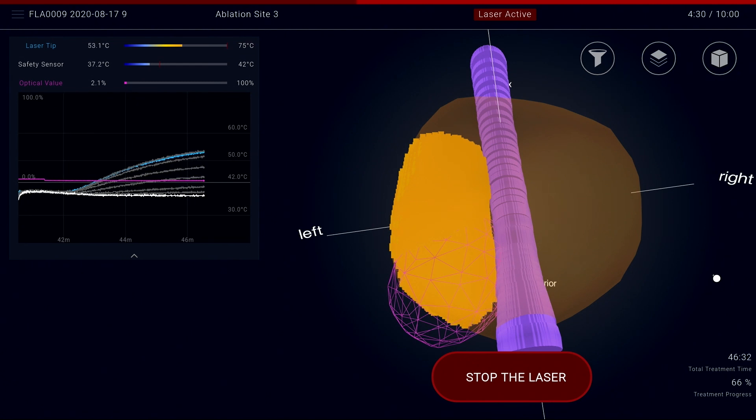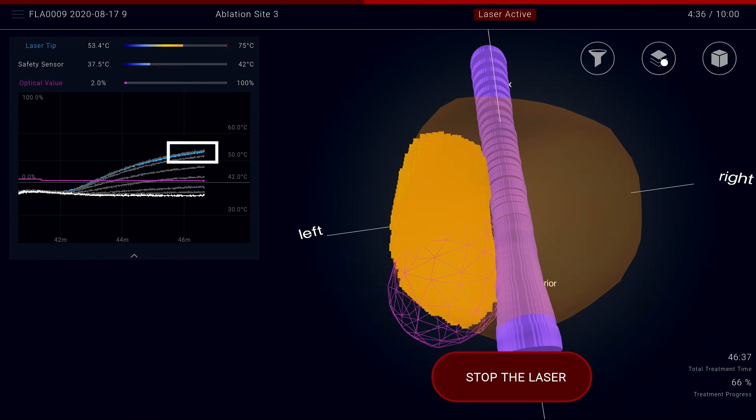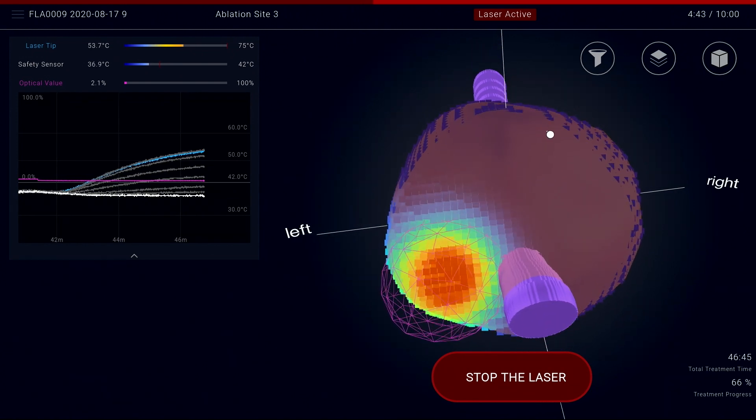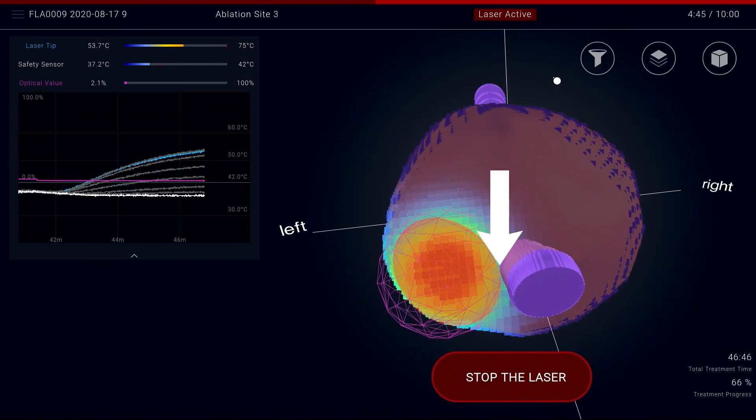Individual ablations are halted by the practitioner when the temperature plateaus without further increase over time, temperatures at the ablation outline reach 60 degrees, or a portion of the ablation approaches critical structures such as the urethra.